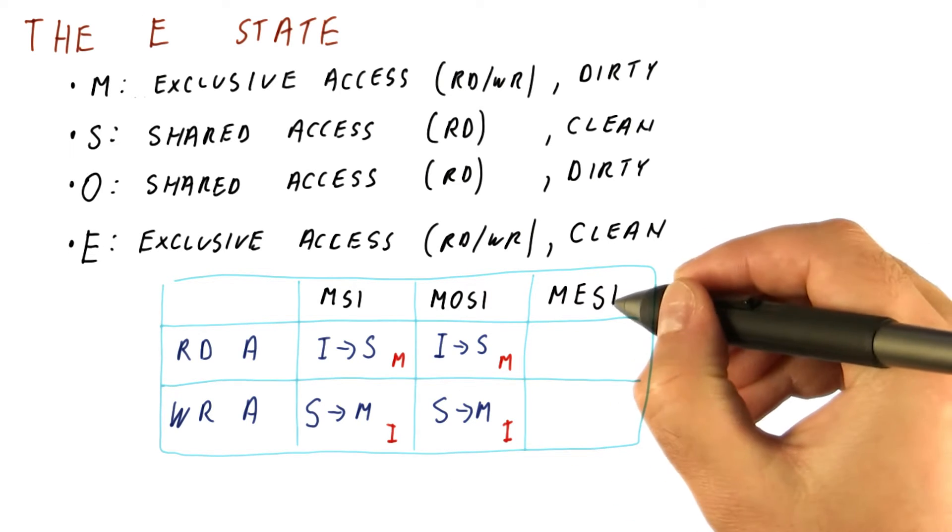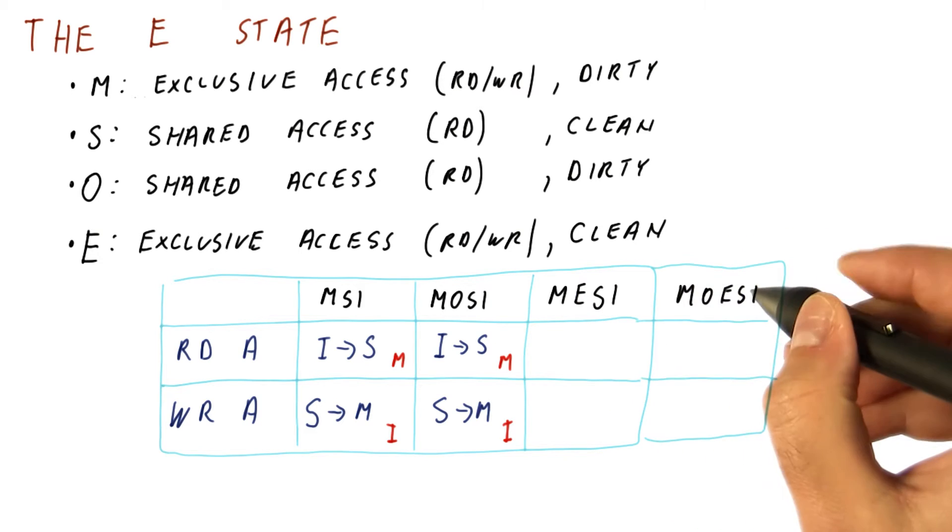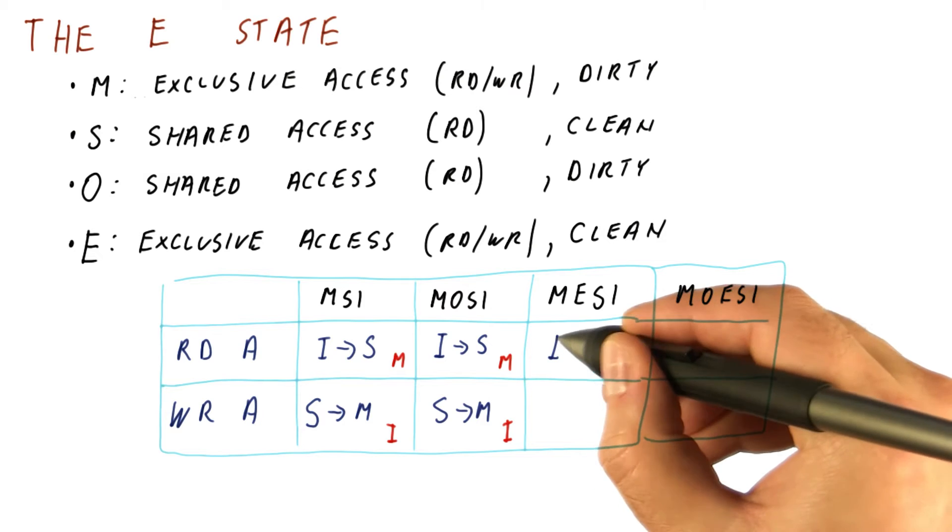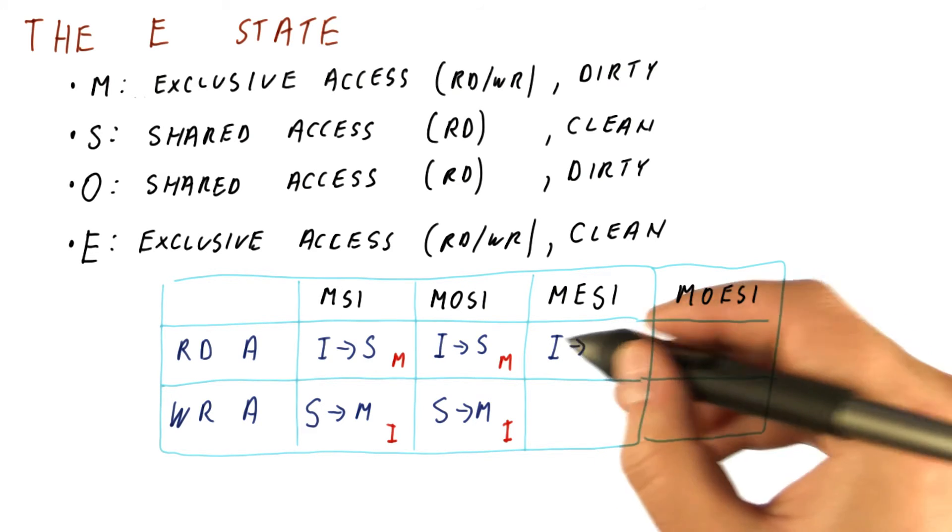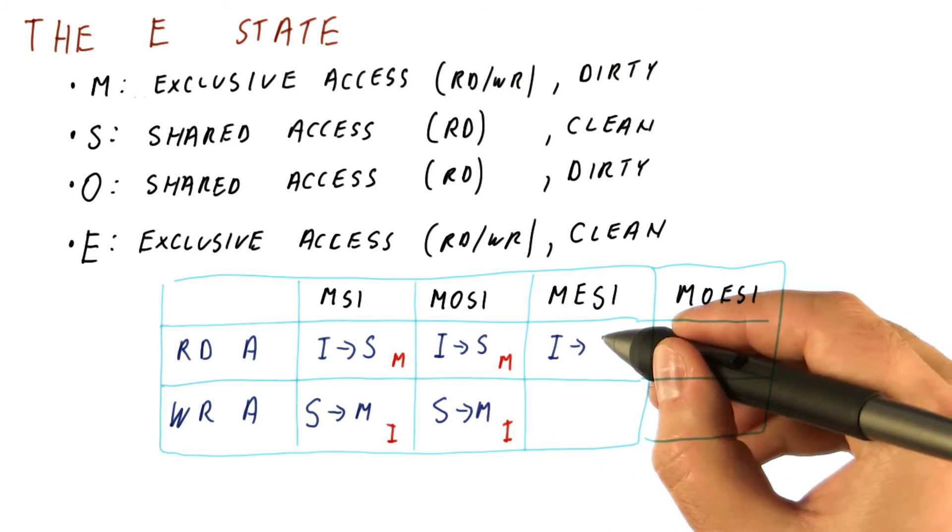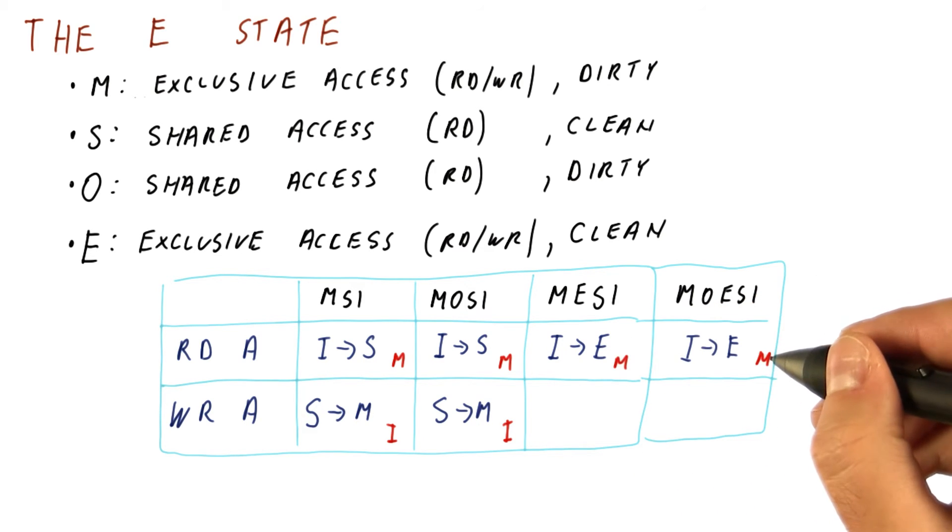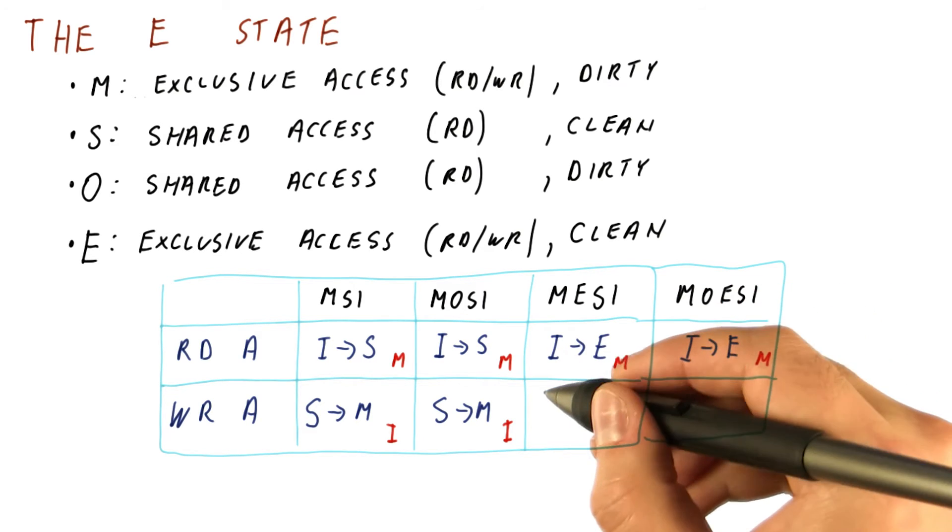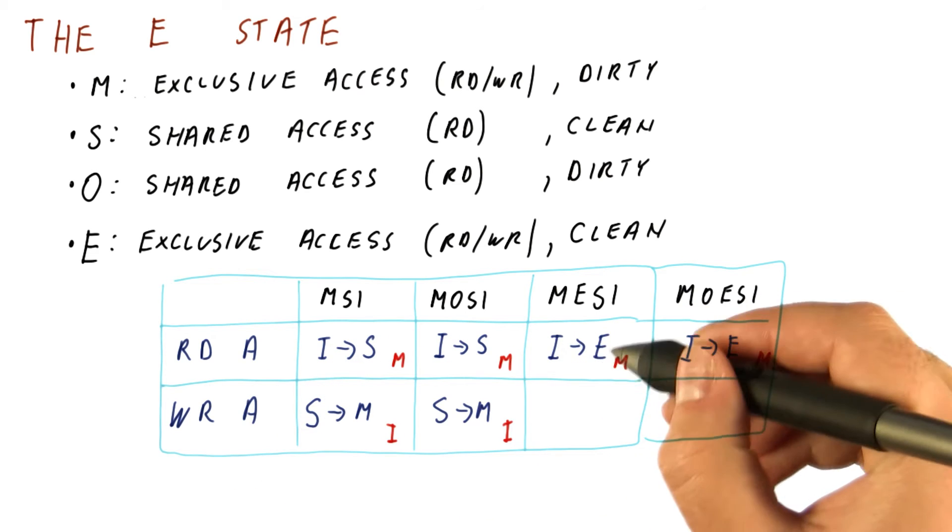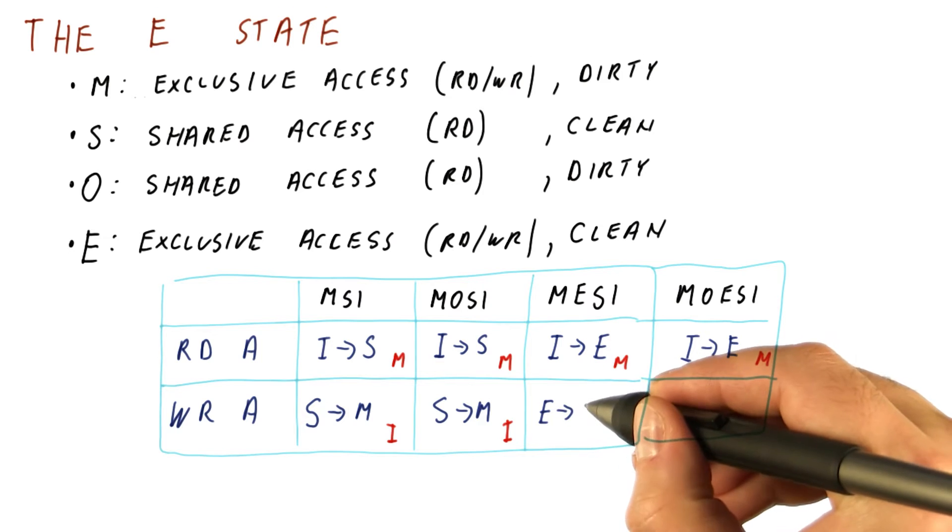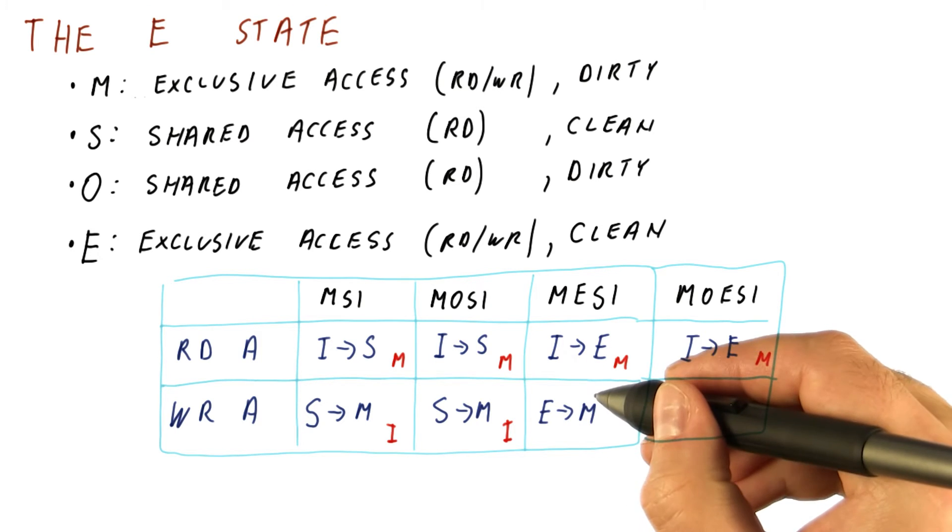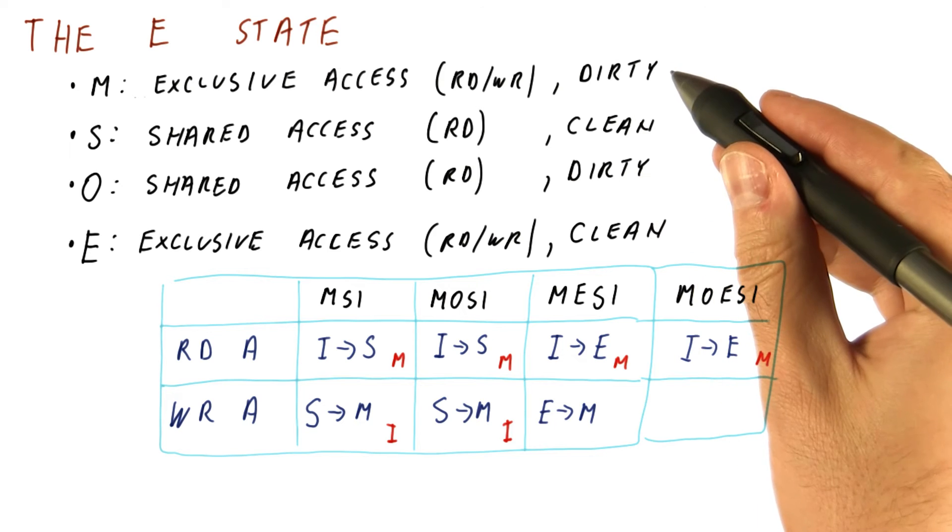If we have the MESI with no O state or a protocol that combines all of the states, when we do a read, we now detect that although we have read the block, we are the only one having it. So instead of going to the shared state, we go to the E state and we suffer a miss. But the idea now is that when a write to A occurs, we know we have exclusive access. So we can just write without telling anybody. Although we have to transition to the M state now, because now the block is also dirty.